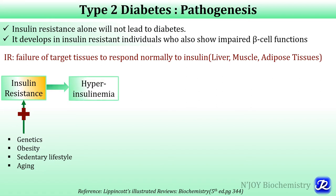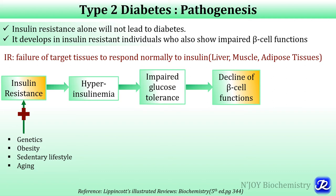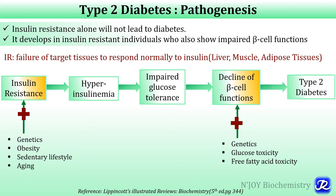Because of insulin resistance, as a compensatory mechanism there is hyperinsulinemia — increased production of insulin from beta cells of islets of Langerhans — leading to impaired glucose tolerance. Eventually there is decline in beta cell function. Beta cell dysfunction is contributed by genetic factors, glucose toxicity from increased glucose levels, and circulating free fatty acids from insulin resistance. Insulin resistance and decline of beta cell function together result in type 2 diabetes.